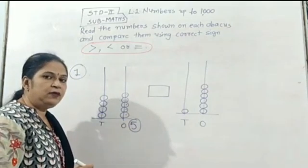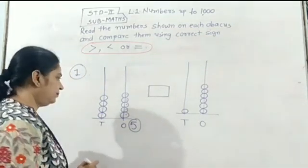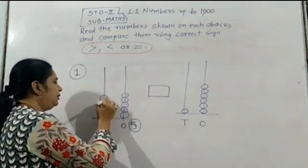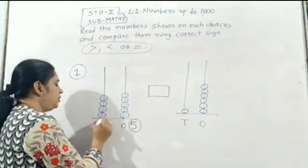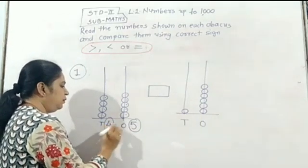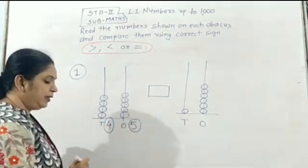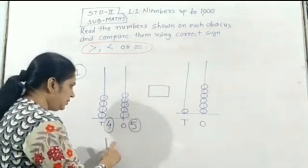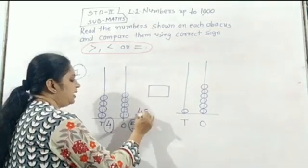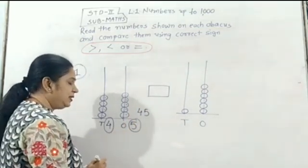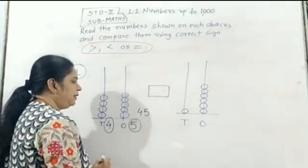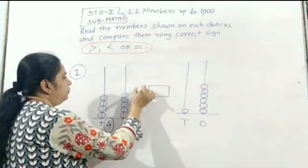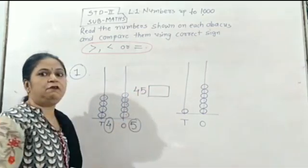Now we will count the tens: 1, 2, 3, 4. So the number is 4 tens. Now what is the real number? That is 45. We will write it here: 4, 5 — 45.